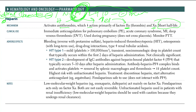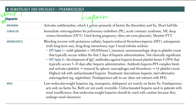And factor 2a as well. Heparin must bind to both factor 2a thrombin and antithrombin to form a complex. When heparin binds to this, it forms a complex that will inhibit thrombin, leading to inhibition of thrombin.